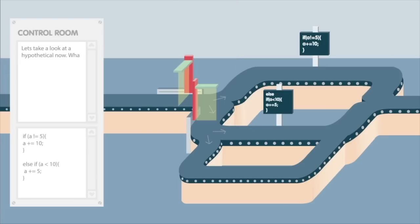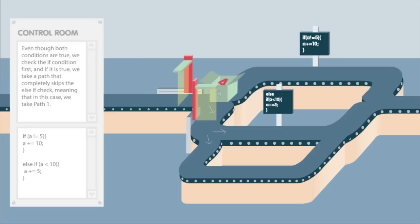Let's take a look at a hypothetical now. What if A had been equal to 4 when it reached the if-else-if statement? Both the if condition and the else-if condition are true. Even though both conditions are true, we check the if condition first, and if it is true, we take a path that completely skips the else-if check, meaning that in this case, we take path 1.